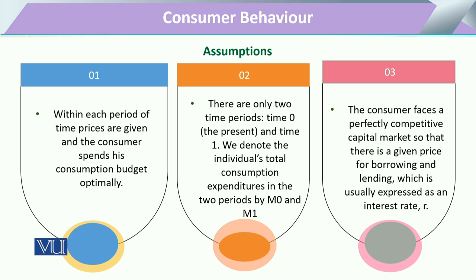In these assumptions we have that when there is a movement of consumption pattern, it means that every period of time the prices should be given and the consumer spending their consumption budget optimally. Assumption 2 says that there are only two time periods — time zero, or time t, and time one.